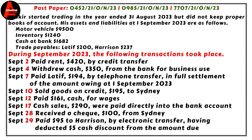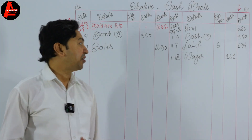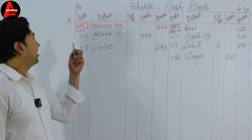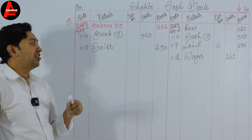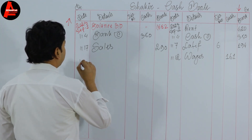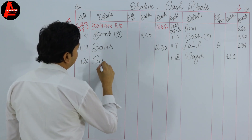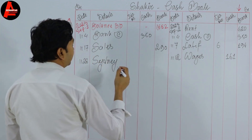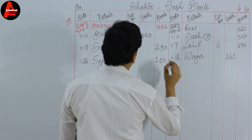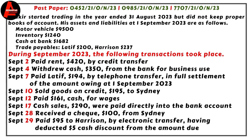September 28: received a check for 100 dollars from Sydney. Receiving a check means receiving money by bank, because we deposit the check into the bank. So bank balance increases and we record on the debit side. We write date September 28, Sydney in the detail column, and 100 dollars on the bank column.